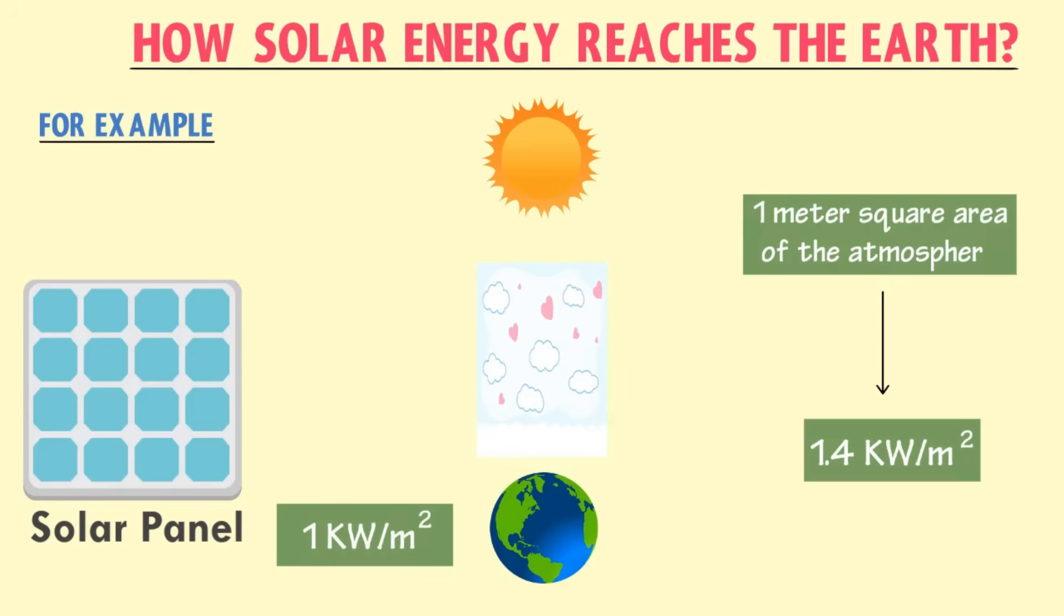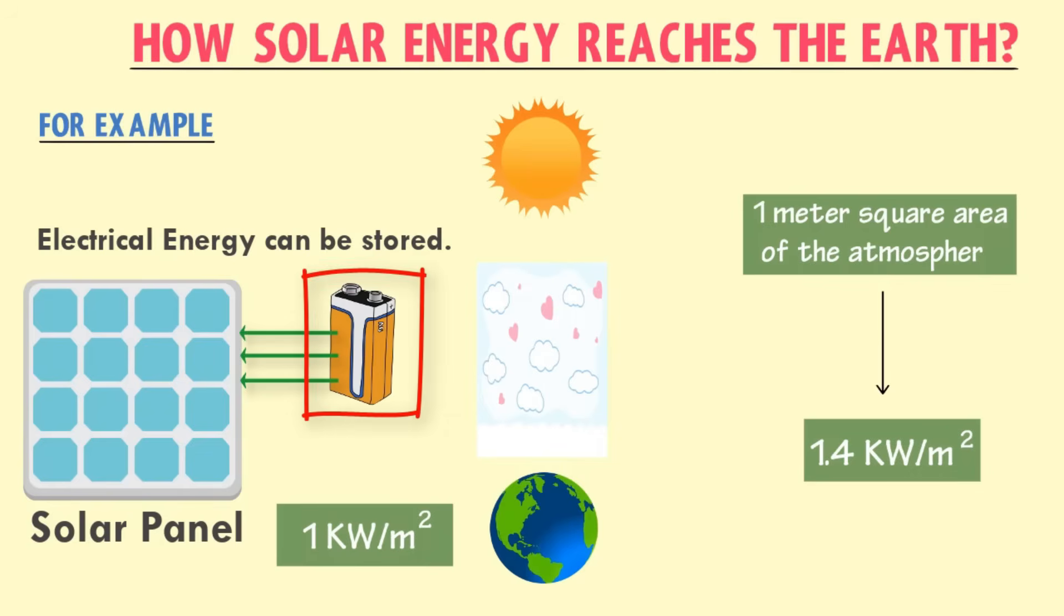For cloudy days or nights, electric energy can be stored during the sunlight in nickel cadmium batteries by connecting them to solar panels. These batteries can then provide power to electrical appliances at night or on cloudy days. Although solar cells are expensive, they last for a long time and have low running costs.